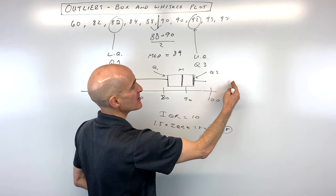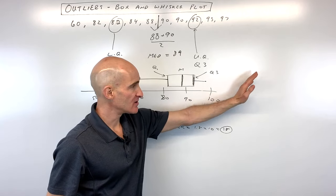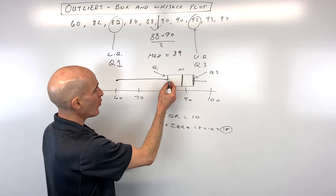Are there any data points that are greater than 107? No. So that means there's not going to be any outliers above the data set here.